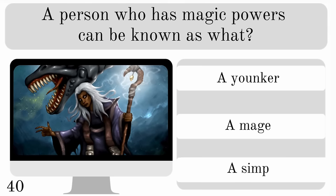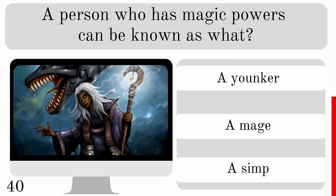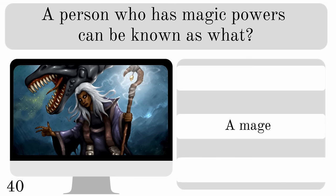A person who has magic powers can be known as what? A yanker, mage or simp? The answer is a mage.